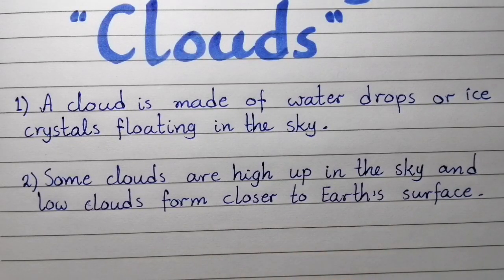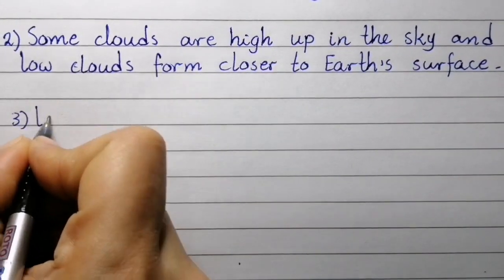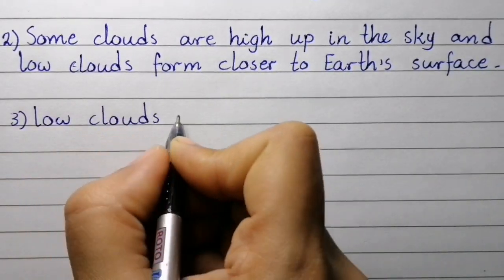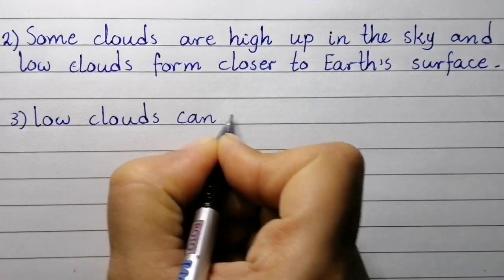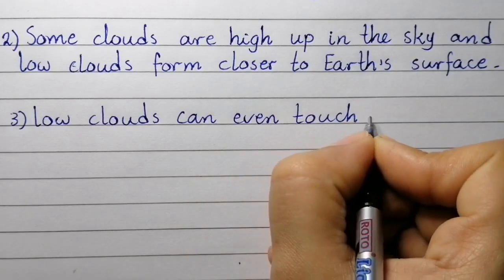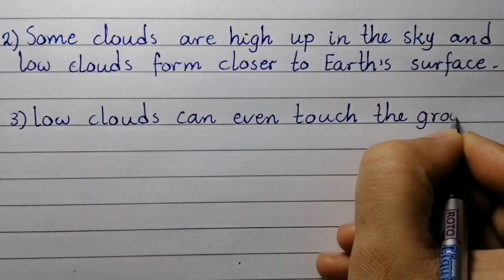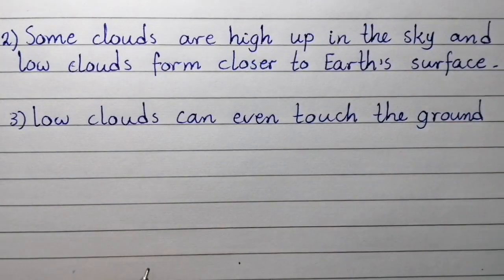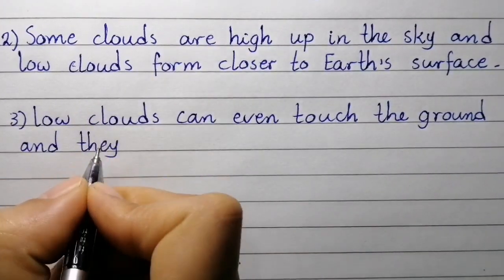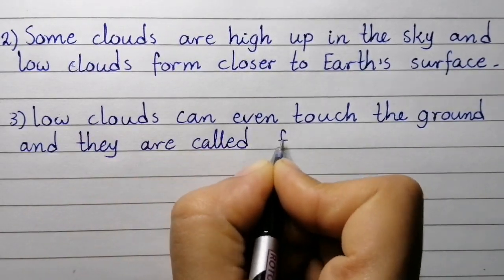Point number three: low clouds can even touch the ground, and they are called fogs.